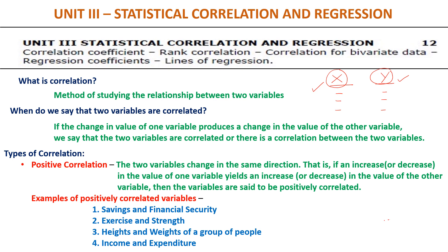To summarize: if a change in the value of one variable — it could be x or y — automatically generates a change in the value of the other variable, then we say the two variables are correlated. Correlation is a method of studying the relationship between two variables. We judge whether there is a relationship by changing the value of one variable and seeing if there is a corresponding change in the other variable.